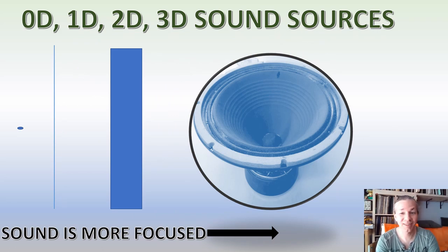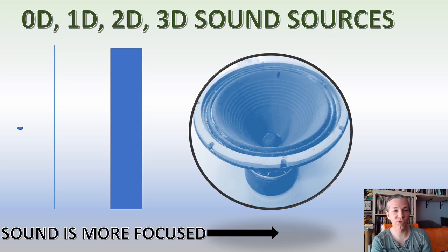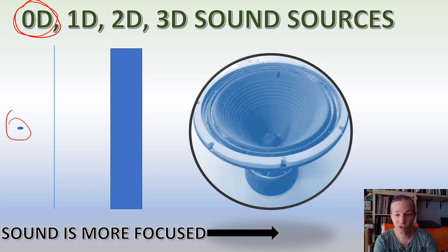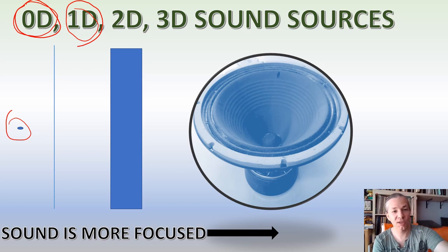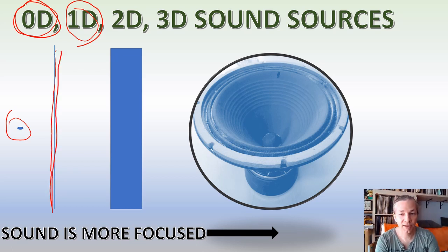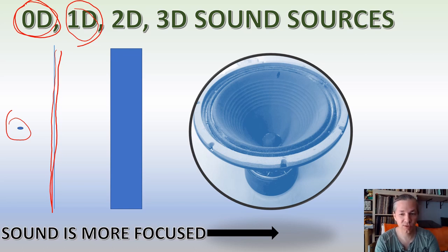Let's look at the degrees of focusing sound based on the dimensionality of the sound source. With zero dimensionality — the plasma tweeter — sound propagates in every direction equally. The second case is a one-dimensional source, like a string. In nature you see this with string instruments like guitar, violin, harp, and piano — they all have strings.